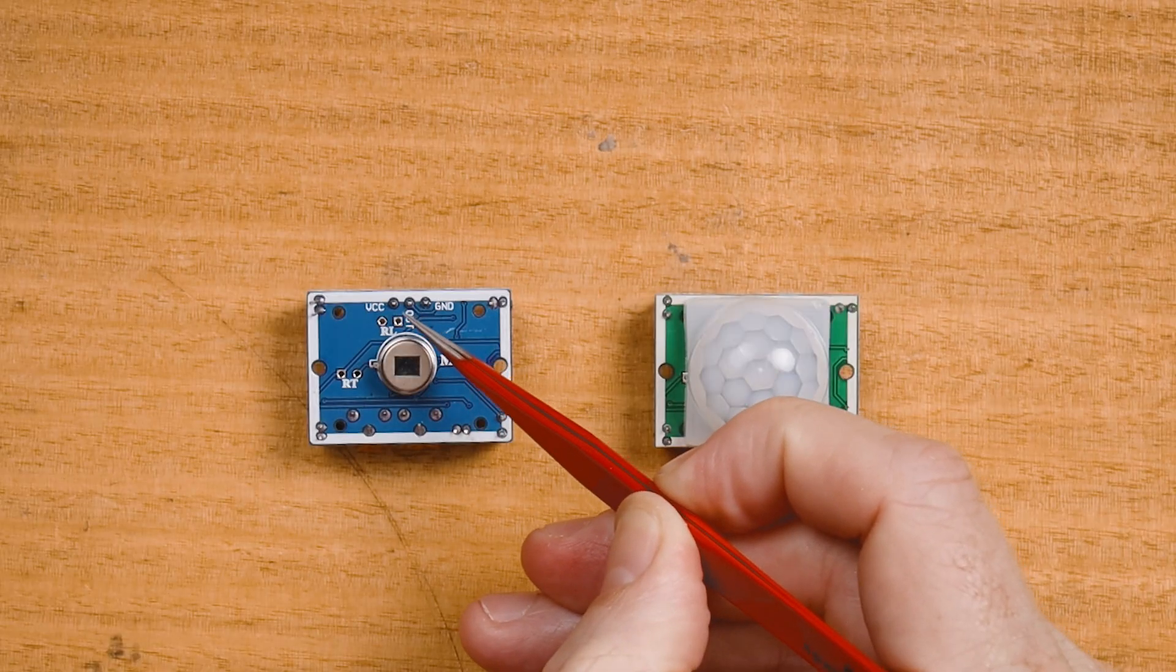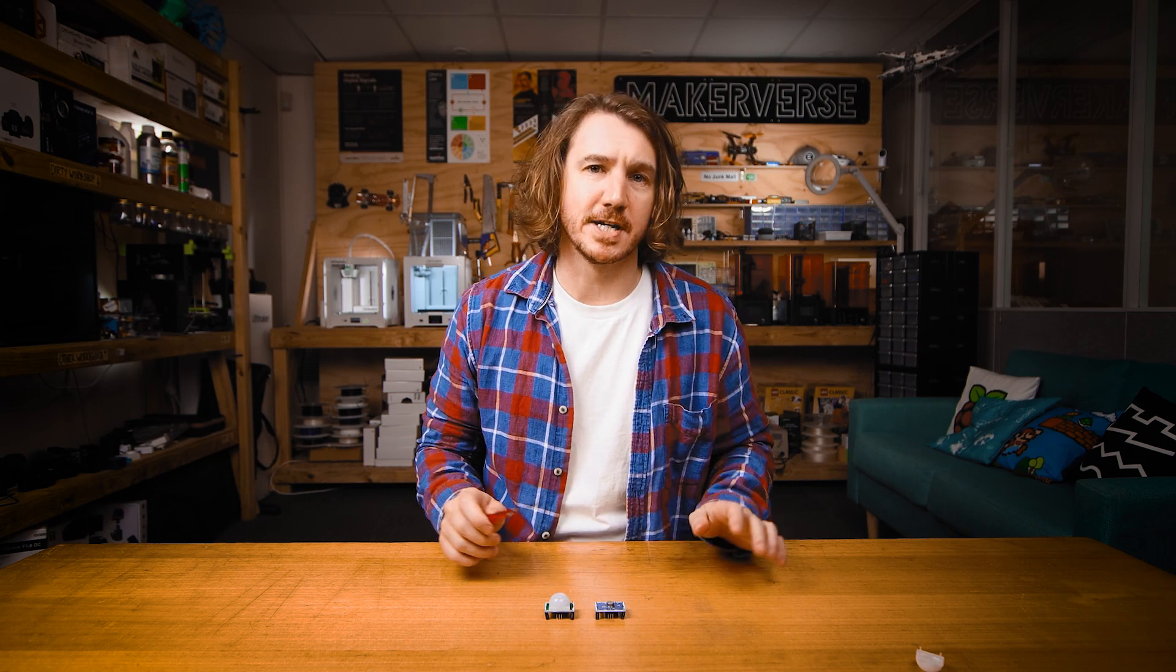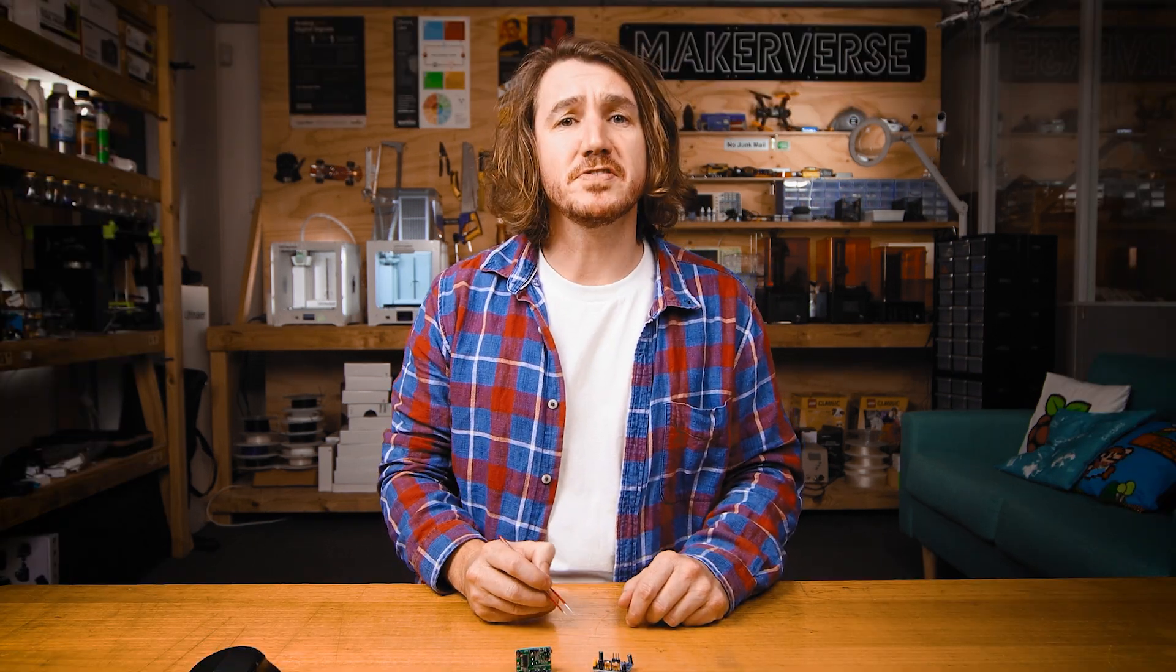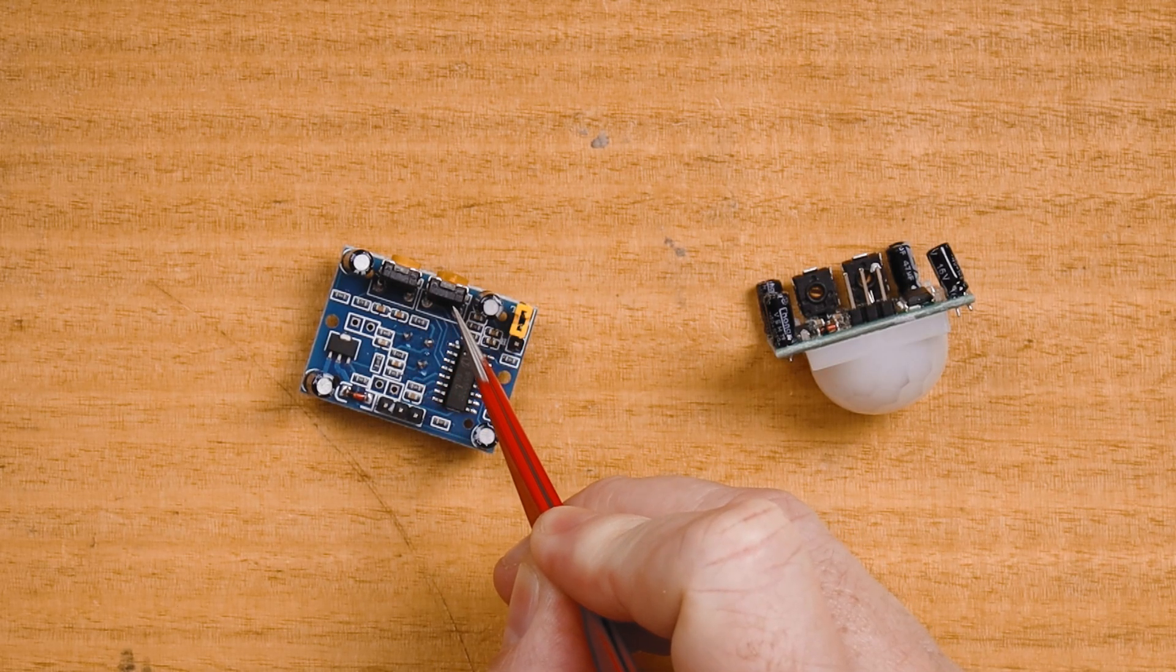The middle pin goes high when something is detected, and then low when that something is no longer detected, which can be read from a microcontroller like the Raspberry Pi Pico. You can also control the sensitivity and high to low delay time with the onboard trim pots. This one is delay, and this one is sensitivity.